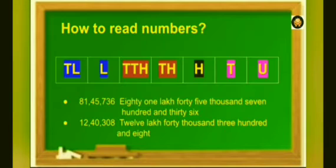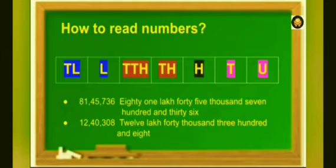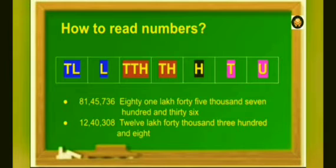Now, let's see how to read numbers. Just as we read 10,000 and 1,000 together, we read 10 lakh and lakhs together. So, we read the number 81,45,736 as eighty-one lakh forty-five thousand seven hundred thirty-six. Similarly, 12,40,308.